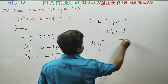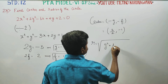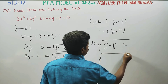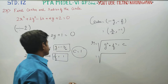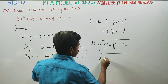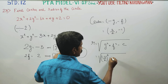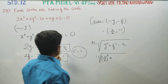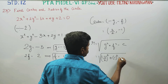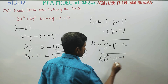After finding the center, you have to find the radius. The radius formula is square root of g squared plus f squared minus c. Then, g is minus 3 by 2, f is minus 1, and c value is 1.